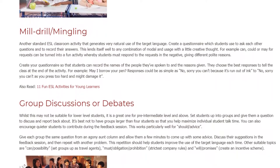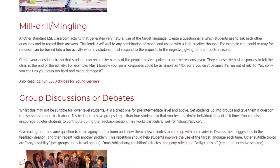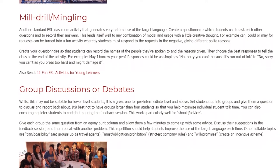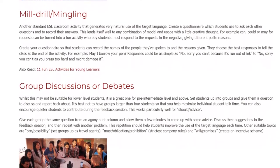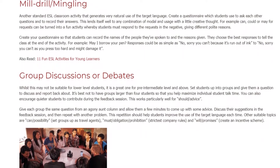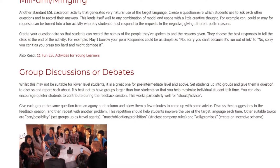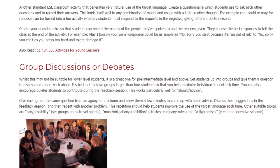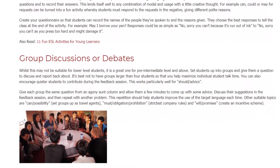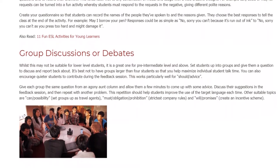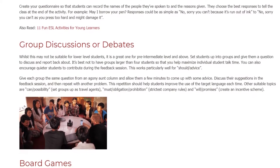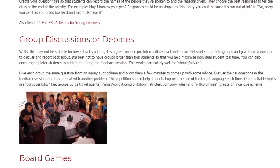Group Discussions or Debates: Whilst this may not be suitable for lower level students, it is a great one for pre-intermediate level and above. Set students up into groups and give them a question to discuss and report back about. It's best not to have groups larger than four students so that you help maximize individual student talk time. This works particularly well for 'should' (advice). Give each group the same question from an Agony Aunt column and allow them a few minutes to come up with some advice.